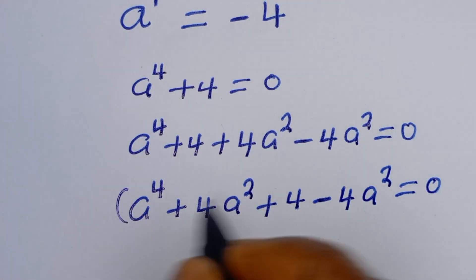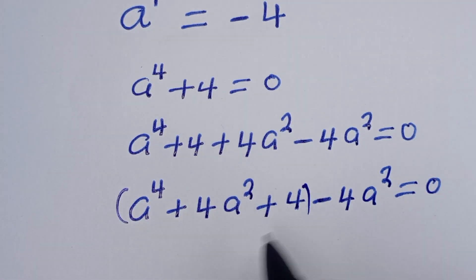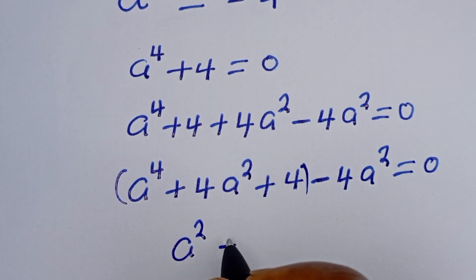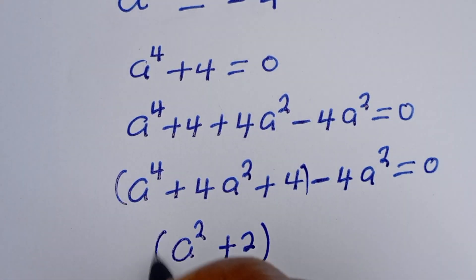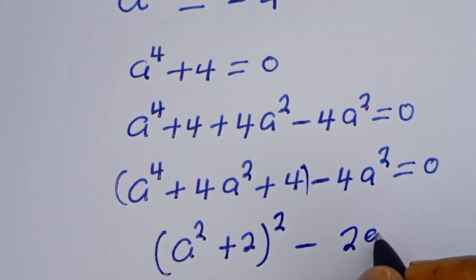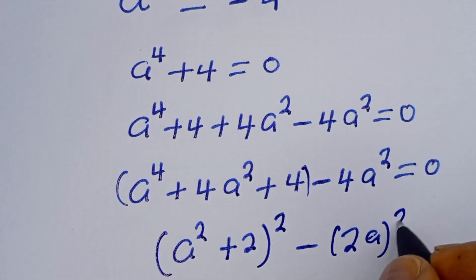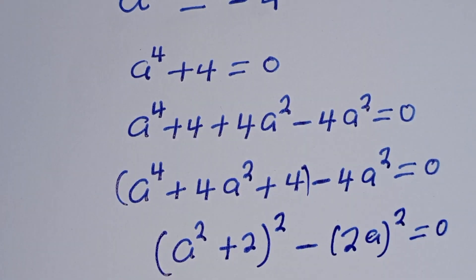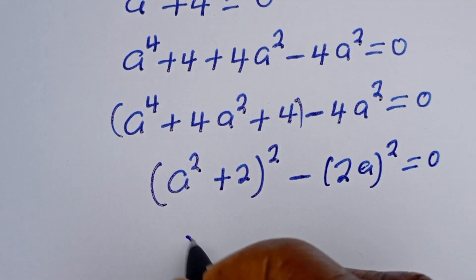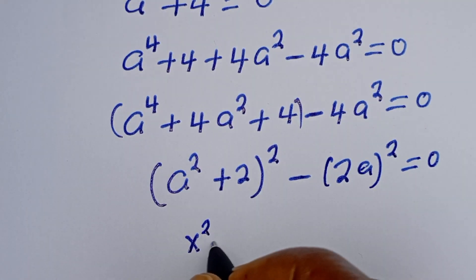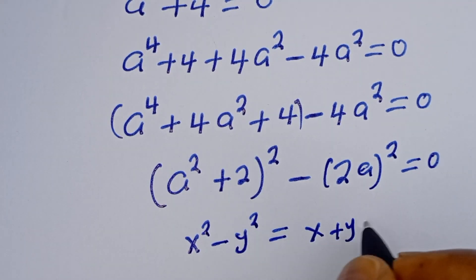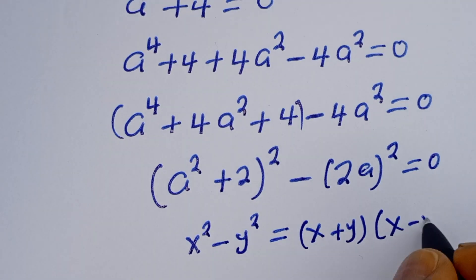Then from here, this can be written as (a squared plus 2) squared, minus (2a) squared, is equal to 0. If you look at this, this is in the form of a difference of squares. That is, if you have x squared minus y squared, this is equal to (x + y)(x − y).